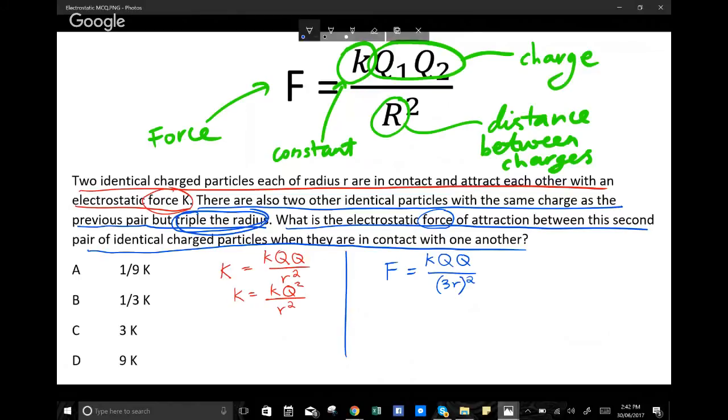So it's three times the radius, but all of that needs to be squared. If I simplify this, we get k Q squared over nine R squared.